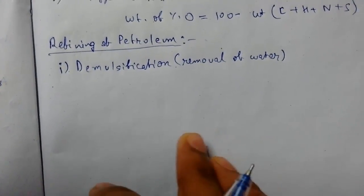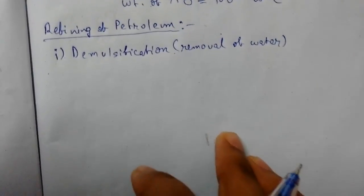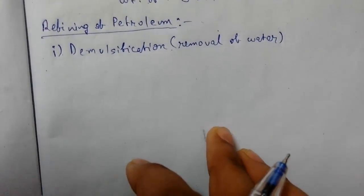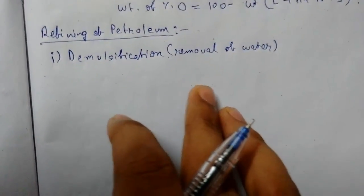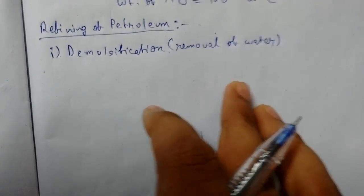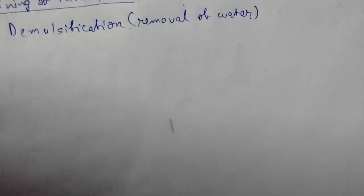The demulsification is achieved by a process known as Cottrell's process, in which water is removed by allowing the crude petroleum to flow between very high charged electrodes, and the colloidal water coalesces to form large drops and get separated from the crude oil.